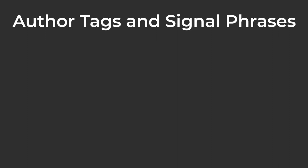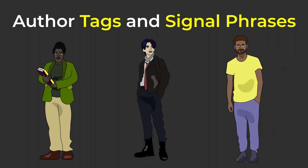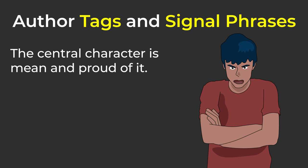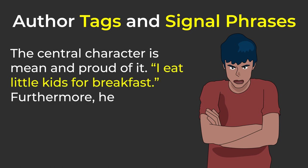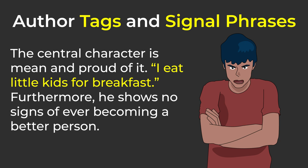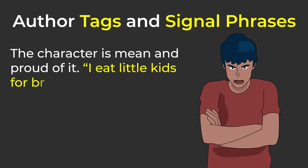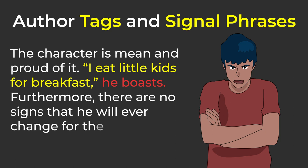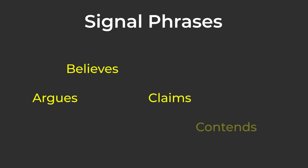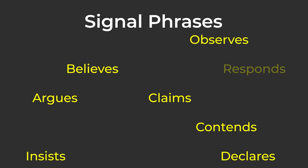Author tags and signal phrases. Additional elements that smoothly integrate quotations into the flow of your writing are tags and signal phrases. Tags and signal phrases that identify the author, the character, or the commenter you're quoting help the reader make the connection between the quotation and its source. Remember the drop quotation: "The central character is mean and proud of it. 'I eat little kids for breakfast.' Furthermore, he shows no signs of ever becoming a better person." Now look at how we integrated it: "The character is mean and proud of it. 'I eat little kids for breakfast,' he boasts. Furthermore, there are no signs that he will ever change for the better." Here are some verbs you might use in your signal phrases: argues, believes, claims, contends, declares, insists, observes, responds, states, suggests. Look for verbs that communicate clearly and strongly.